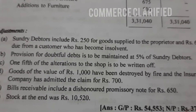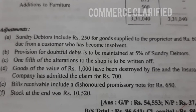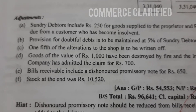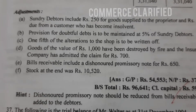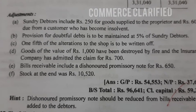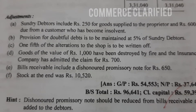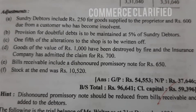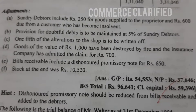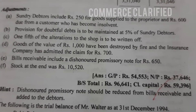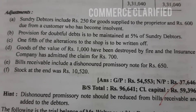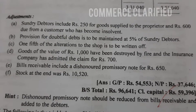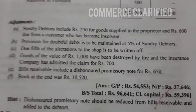Bills receivable include a dishonored promissory note for rupees 650. So bills receivable are reduced by 650. The dishonored promissory note of 650 is transferred back to the debtor's account — it is added to sundry debtors.